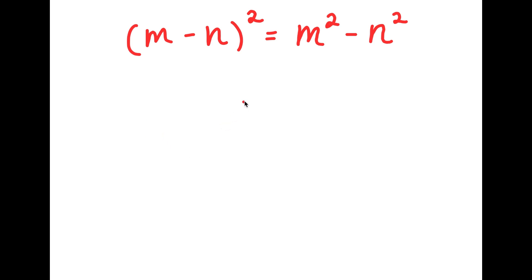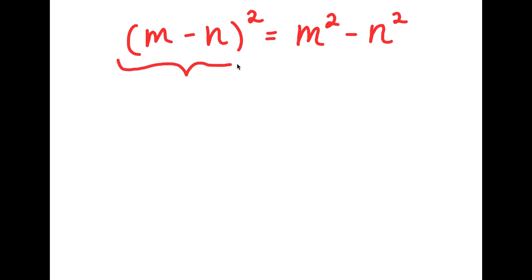All right, so in this problem, I have m minus n squared is equal to m squared minus n squared. So to solve this problem, I'm going to first start by rewriting m minus n squared.